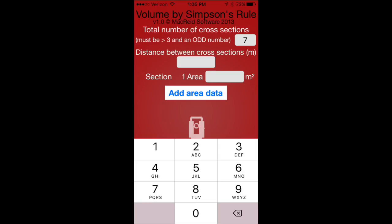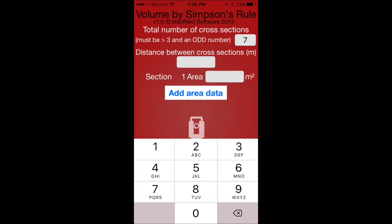First, let's enter the number of cross-sections. In this case, it's seven. Next, we can enter the distance between each cross-section, which is 25 meters, and now we can enter the offset for each cross-section.